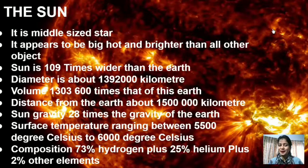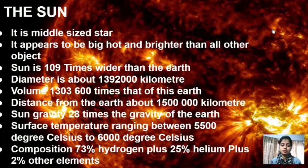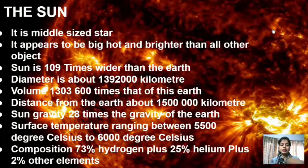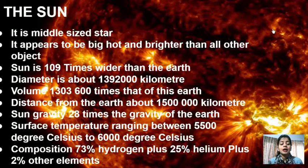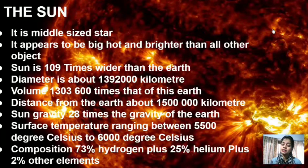The Sun is a middle-size star — neither too big nor too small. It appears big, hot and brighter than all other objects. The Sun is 109 times wider than Earth, meaning if Earth's diameter is 1 meter then the Sun's diameter is 109 meters. The Sun's actual diameter is about 1,392,000 km.